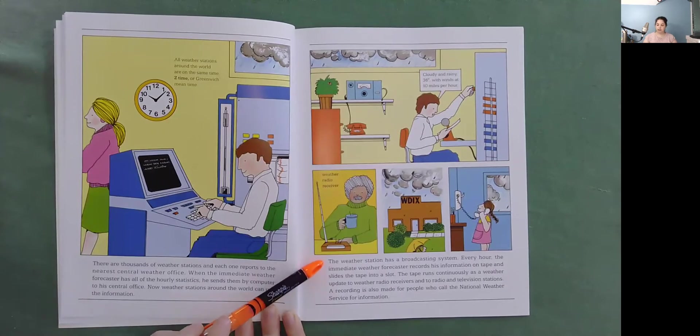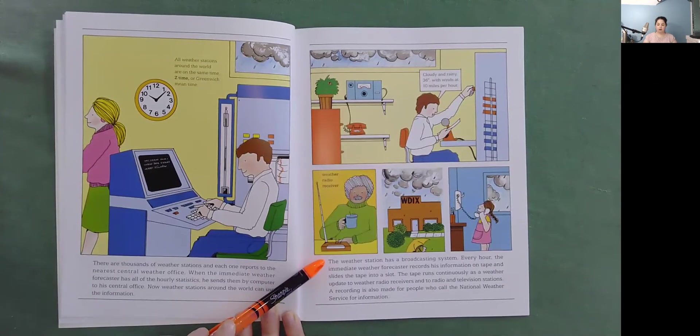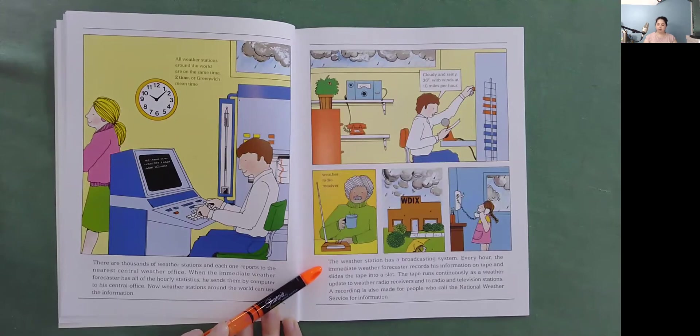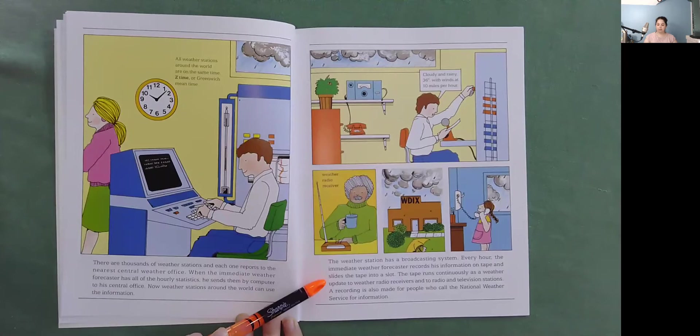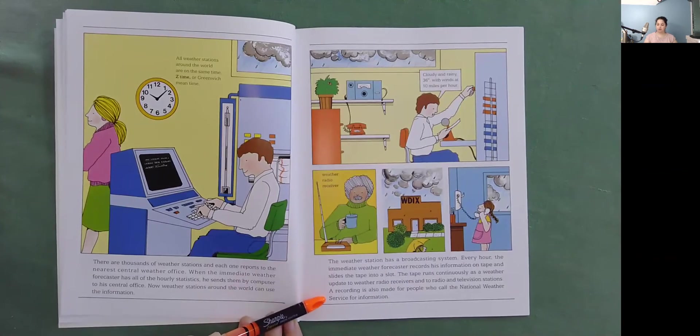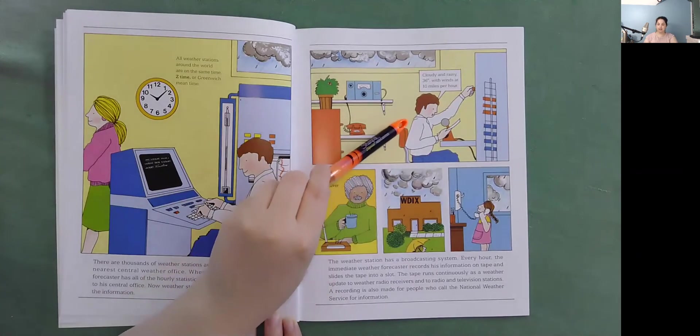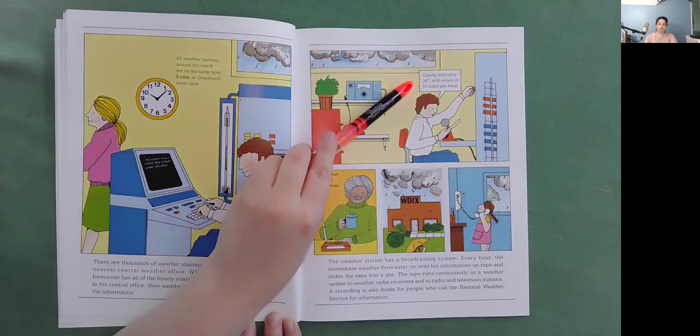The weather station has a broadcasting system. Every hour the immediate weather forecaster records his information on tape and slides the tape into a slot. The tape runs continuously as a weather update to weather radio receivers and to radio and television stations. A recording is also made for people who call the National Weather Service for information. So here the forecast is saying cloudy and rainy 36 degrees with winds at 10 miles per hour.